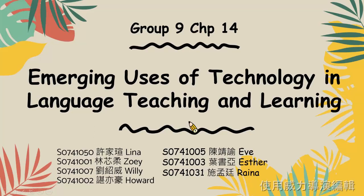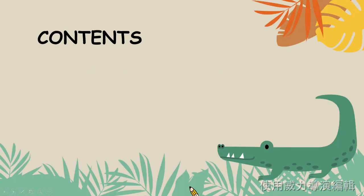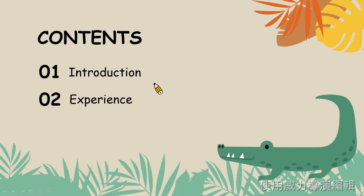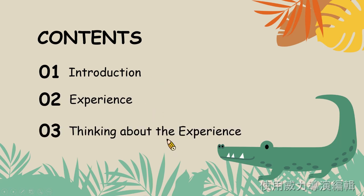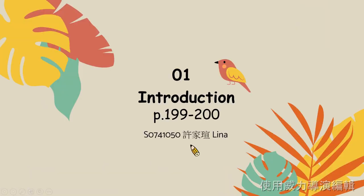Hello everyone, we are Group 9. Today we are going to present Chapter 14, Emerging Uses of Technology in Language Teaching and Learning. These are our group members. 大家好,我們是第九組,今天我們要報告第十四章,以下是我們的組員名單,是按照報告順序所編排的。 I'm the first presenter, Lina Shijiaxuan, and my part is from page 199 to 200 in the book.